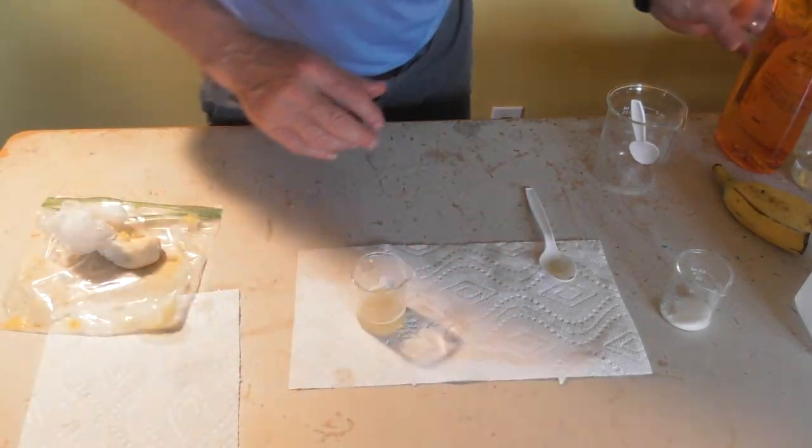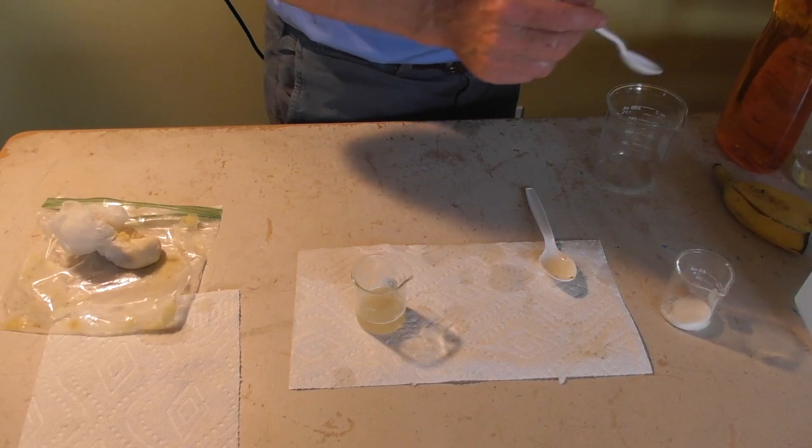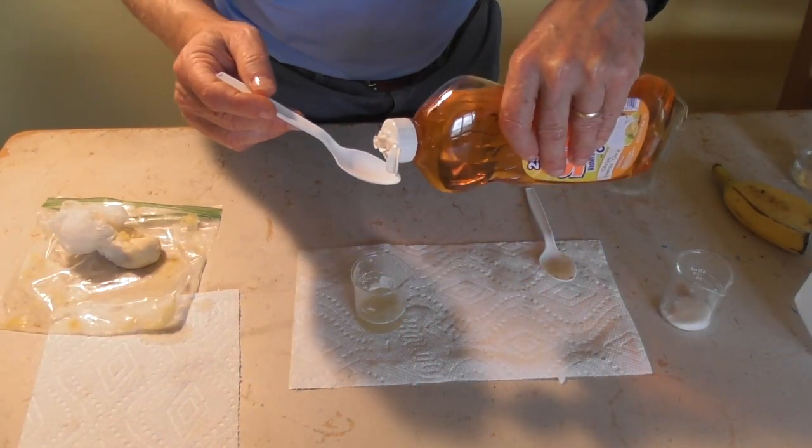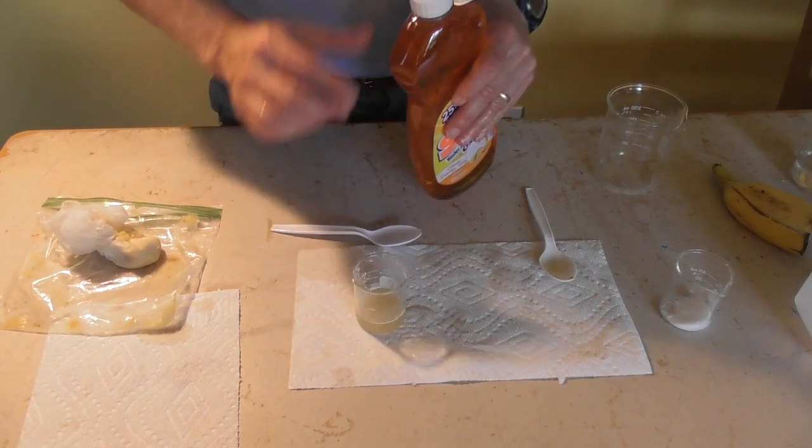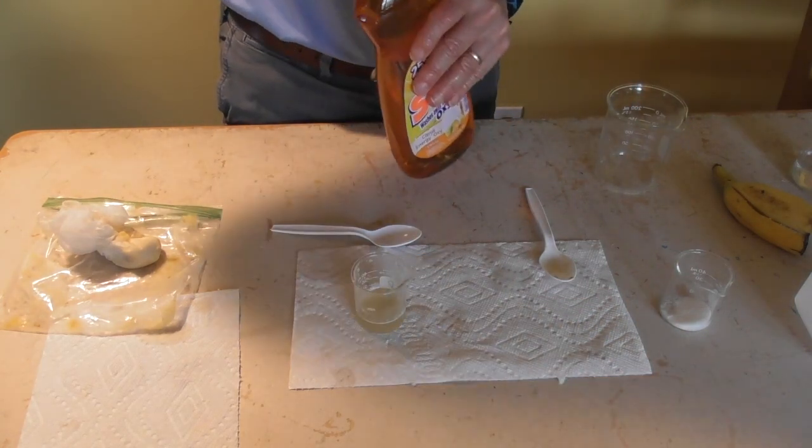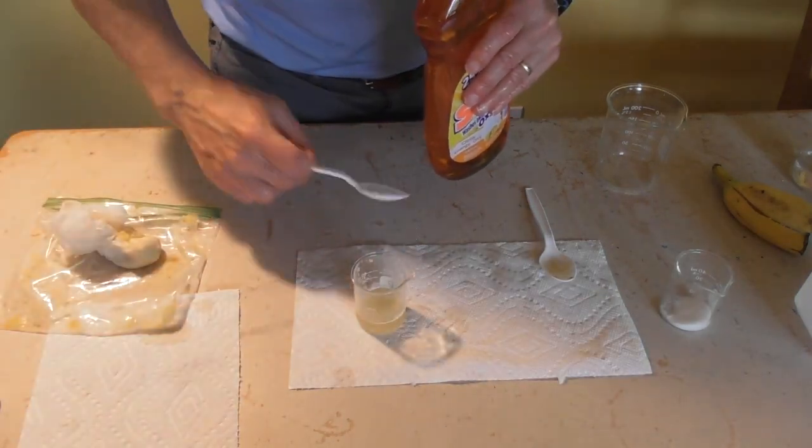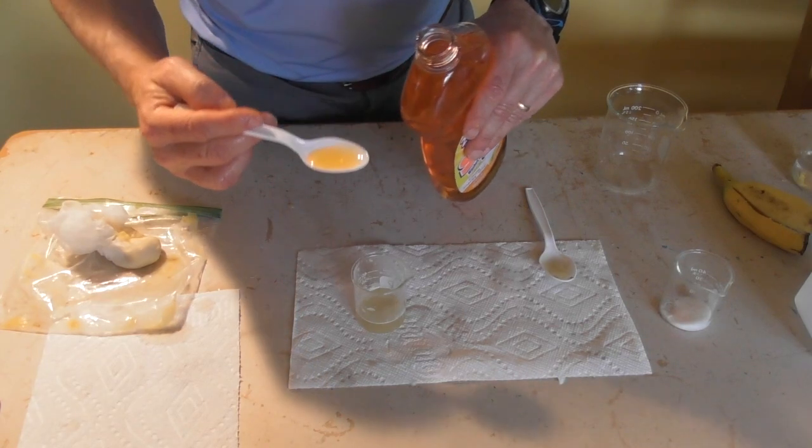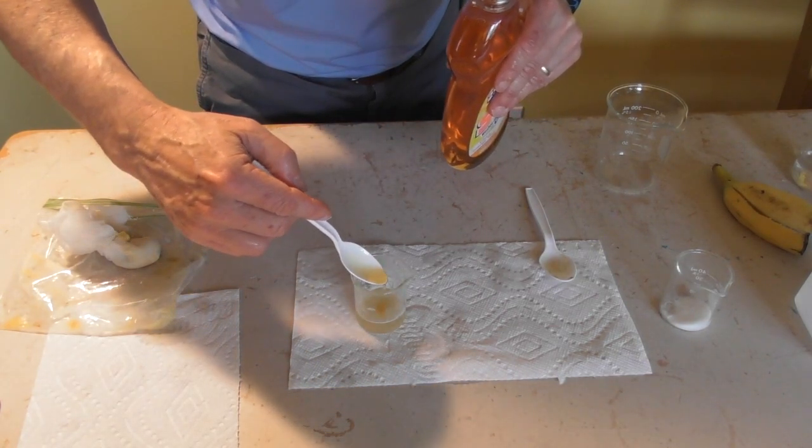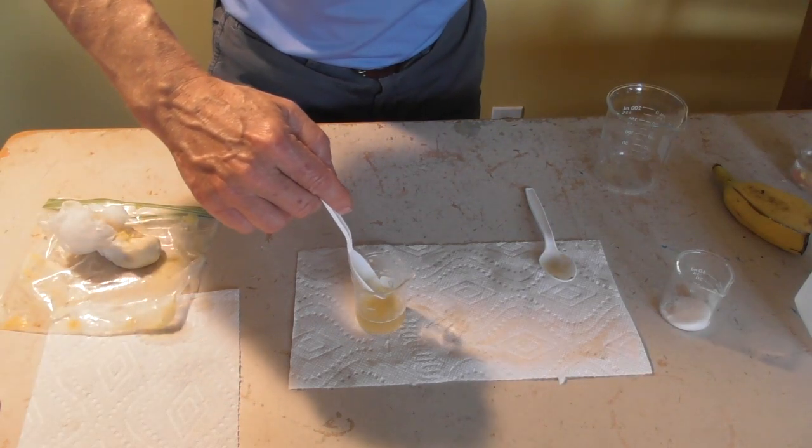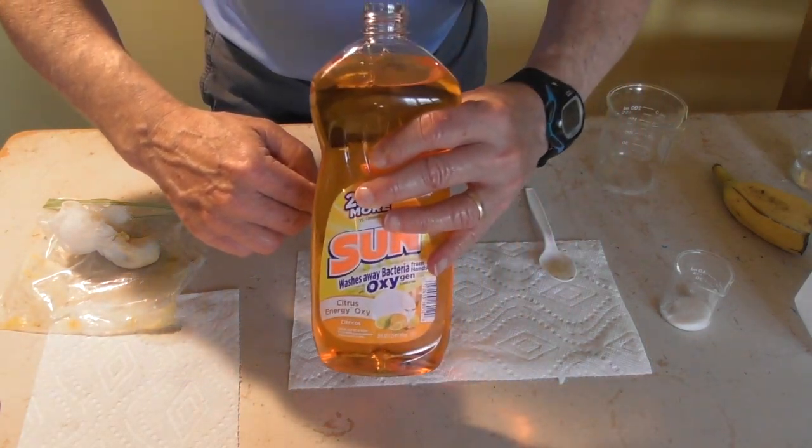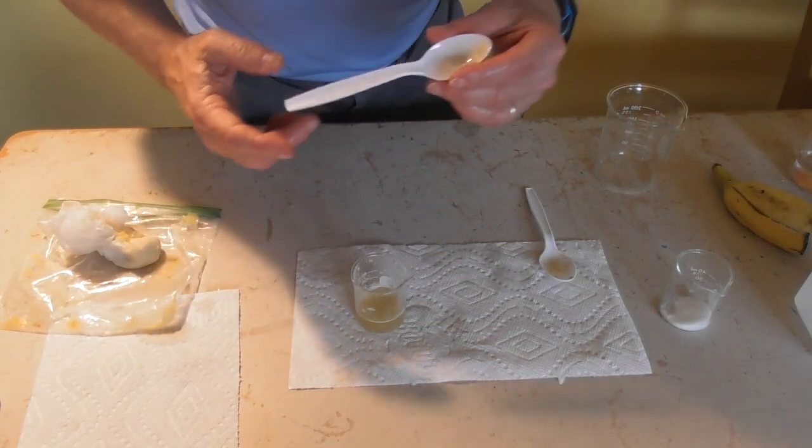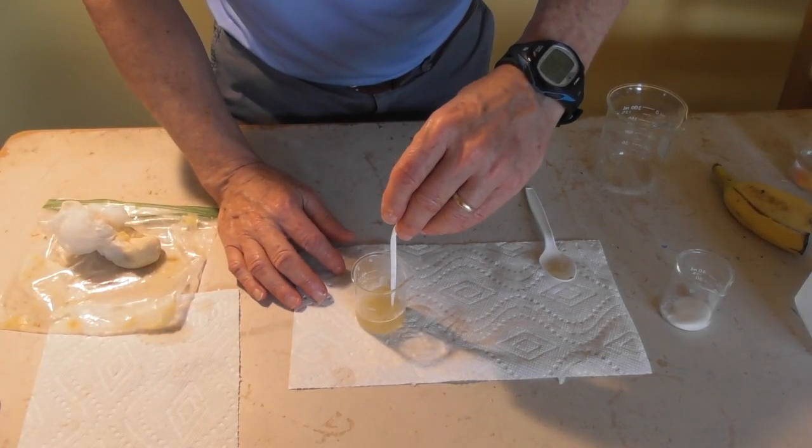The next part is you take dishwashing soap and you want to use one tablespoon of it. So let's go ahead and get a tablespoon. And now this is one part that you can really make a mistake, one tablespoon. Now here's the key to this, this is just dishwashing detergent, you need to stir it, but you want to make sure you don't have bubbles.